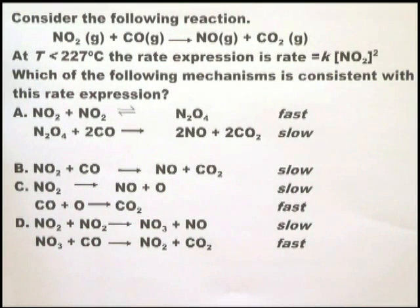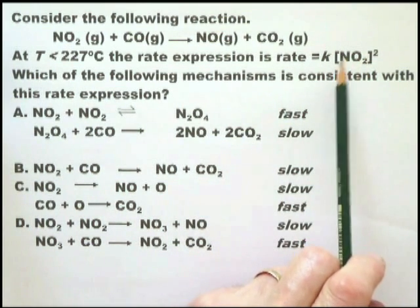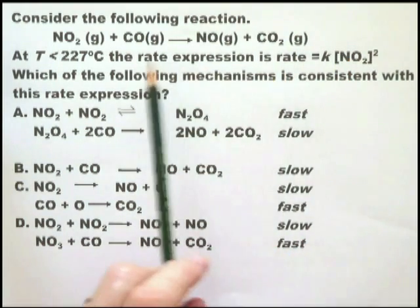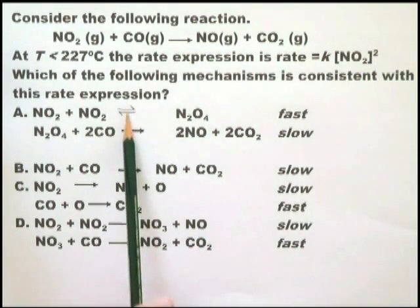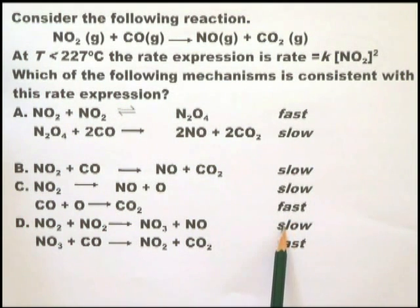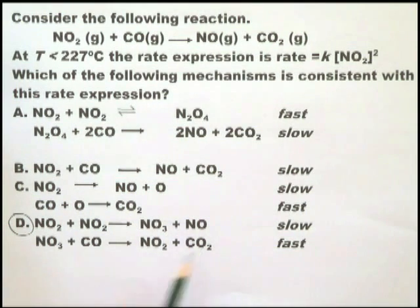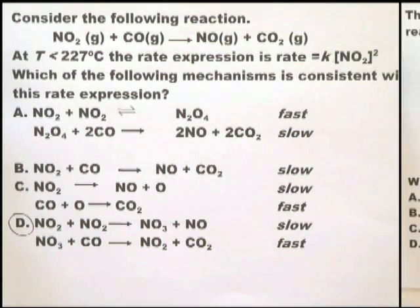There's a lot of information given to you in this question, and it can be a bit confusing. However, you know that the rate expression must apply to a slow reaction, because the rate-determining step is a slow reaction. So you're looking for something where there's NO2 plus NO2, or 2NO2. You look down here and you find the slow one, this one. NO2 plus NO2 goes to NO3 plus NO, or 2NO2 goes to that. That is the slow one, and that clearly applies to this rate expression. Everything else is irrelevant.